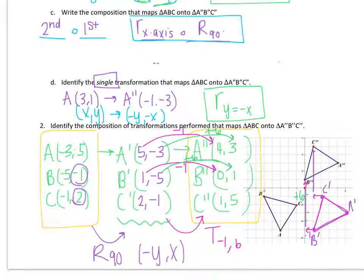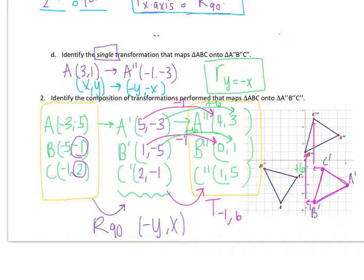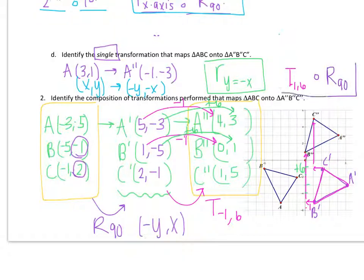My last step is to write the composition using the same notation as before. I write the translation first because that's what I did second — remember, it's in the opposite order — composed with the rotation of 90 degrees. The thing on the right comes first, and the thing on the left comes second.